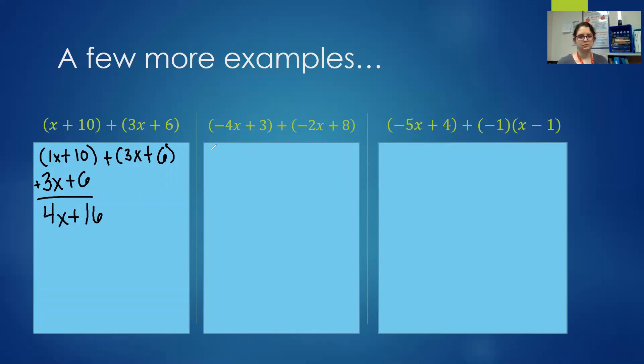This next one has some negatives thrown in, so it is important to remember our integer rules. The negative 2x will stack under the negative 4x and the plus 8 under the positive 3. In this case we want to change our subtraction into plus the opposite using our subtraction integer rules. So a negative 4x plus a negative 2x is a negative 6x. 3 plus 8 is 11. Let's move on.